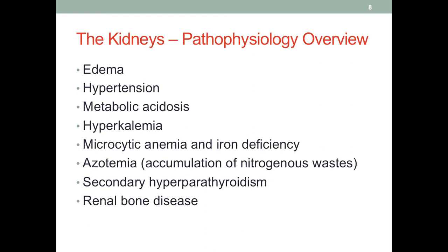As mentioned earlier, the kidneys help buffer dramatic changes in blood pH. The kidney, through urine, can dispose of actual protons. Therefore, if we cannot do this effectively, it will result in metabolic acidosis — too many protons are being generated and we cannot dispose of them as normal. Due to decreased excretion, we will also have retention of potassium in the system, called hyperkalemia, which is a very severe condition because too much potassium in the blood could lead to cardiac arrest.